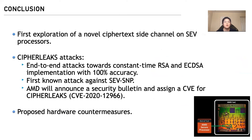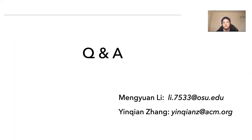In conclusion, this is the first exploration of a novel ciphertext side channel on AMD processors. We present ciphertext attacks and demonstrate two end-to-end attacks against constant-time RSA and ECDSA implementations with 100% accuracy. It is also the first known attack against SEV-SNP, and AMD will announce a security bulletin and assign a CVE for this leak. We also discussed hardware countermeasures. Thank you for listening — you can reach me or my advisor at our email addresses.